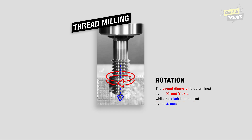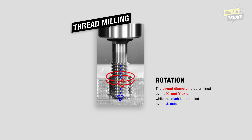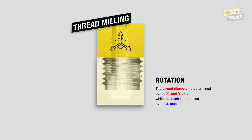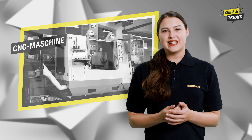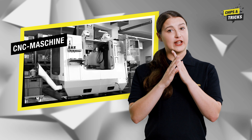A CNC machine is required for thread milling. The rotation of the thread milling cutter and the three main axes — X, Y and Z — creates a thread that is true to gauge. This is prerequisite number one: without a CNC machine with at least three axes, you cannot create a functional thread.